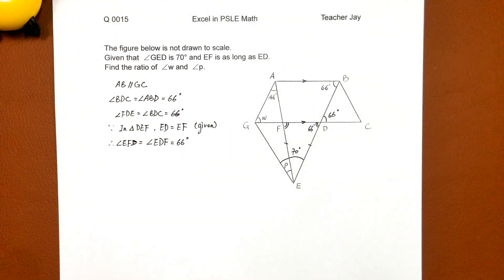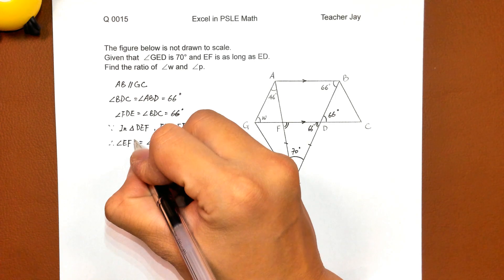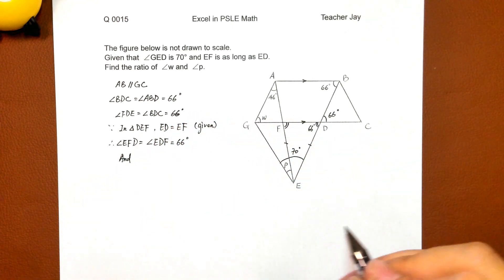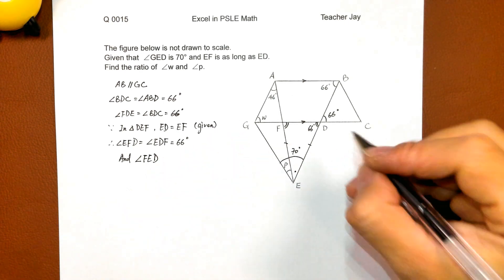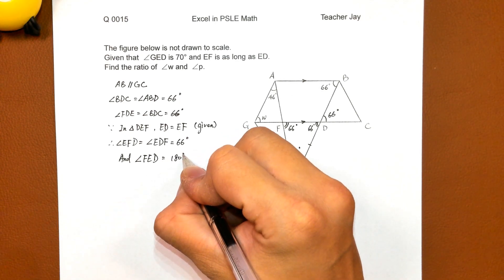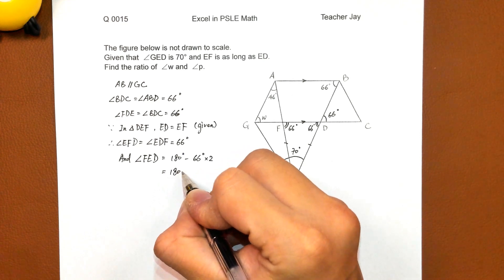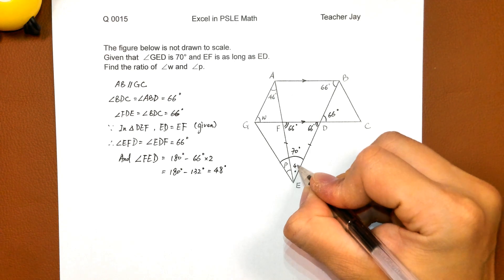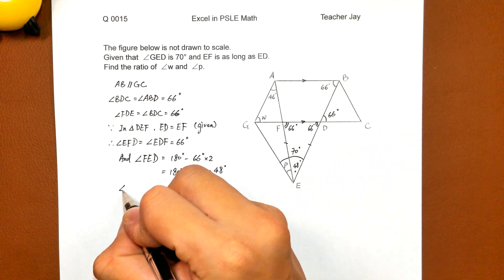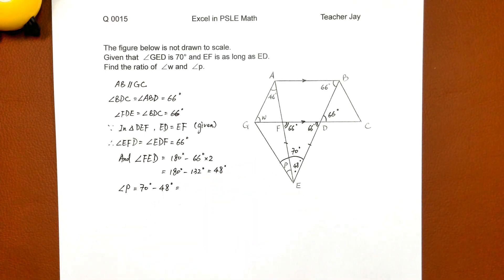66. EFD, EDF, and angle FED, the small one, equals 180 degrees minus 2 times 66 degrees. 180 degrees minus 132 degrees is 48. So angle P equals 70 degrees minus 48 degrees, 22. Here, okay.